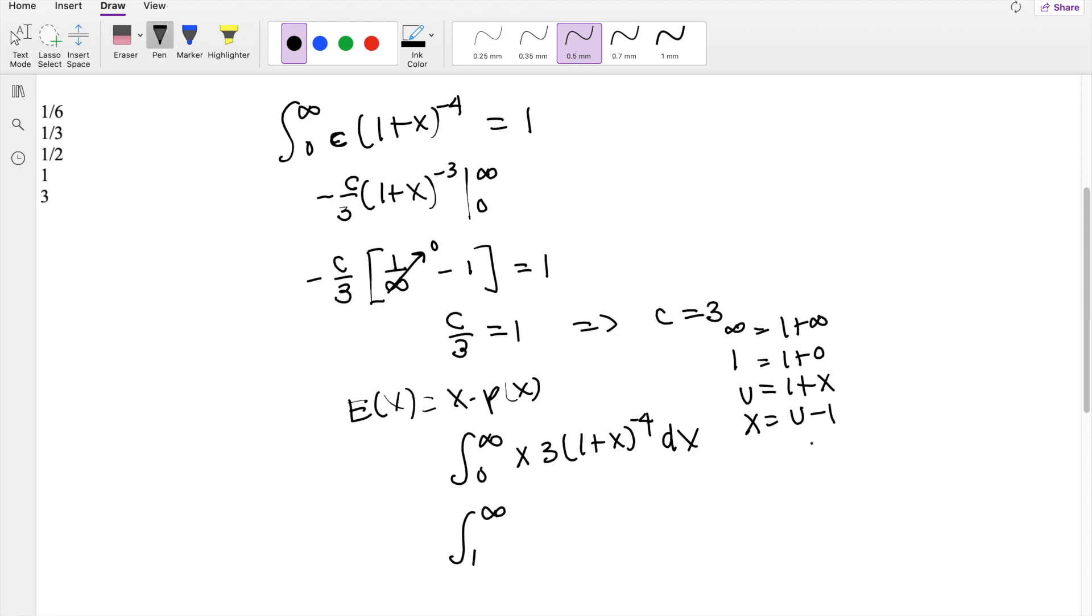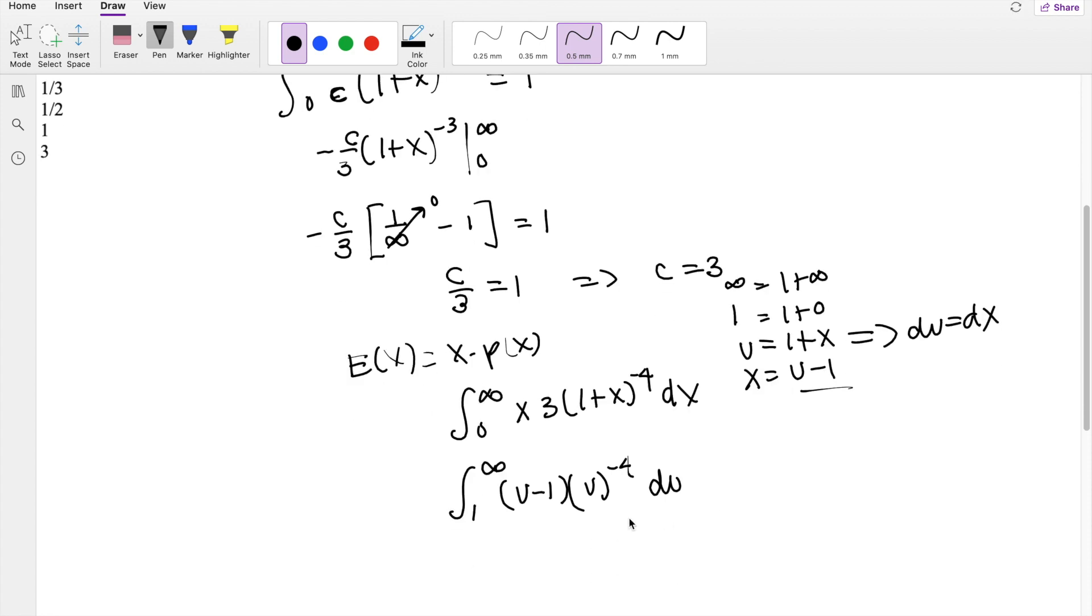Here, x is u minus 1, times 1 plus x, we know this to be u to the negative 4. Taking the derivative, du equals dx, so then this will just be du. And here, I'm just going to multiply u to the negative 4 out. Oh, I lost my 3 here, but there's still a 3. I'm going to multiply u to the negative 4, so you get u to the negative 3 minus u to the negative 4. Still integrating from 1 to infinity, 3 du.